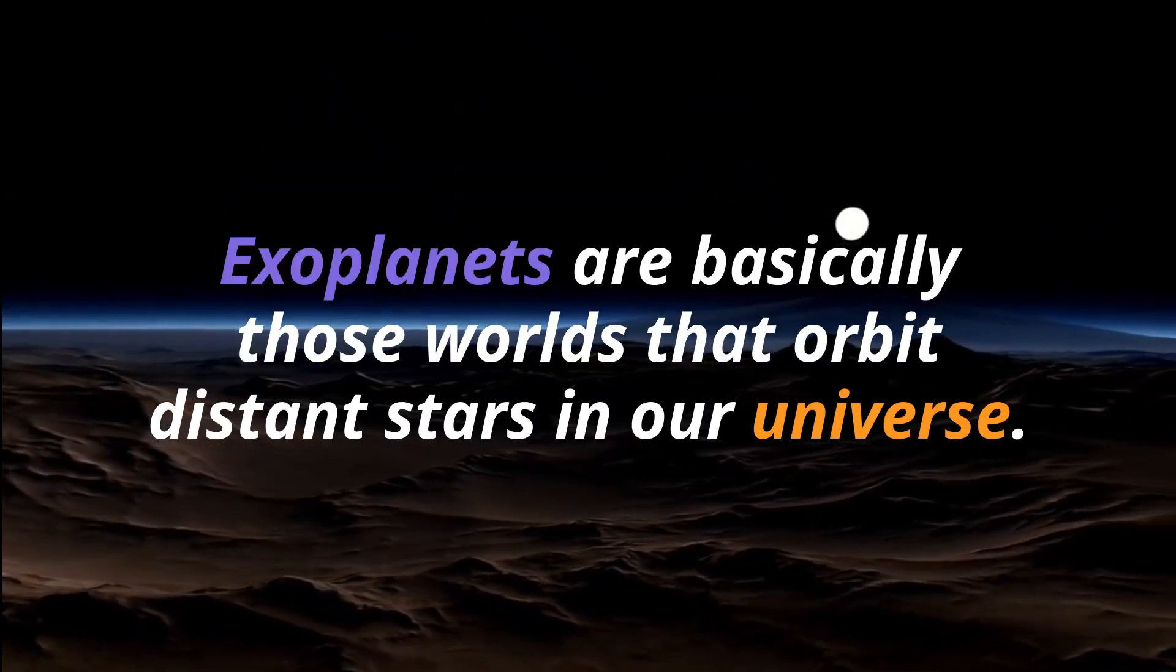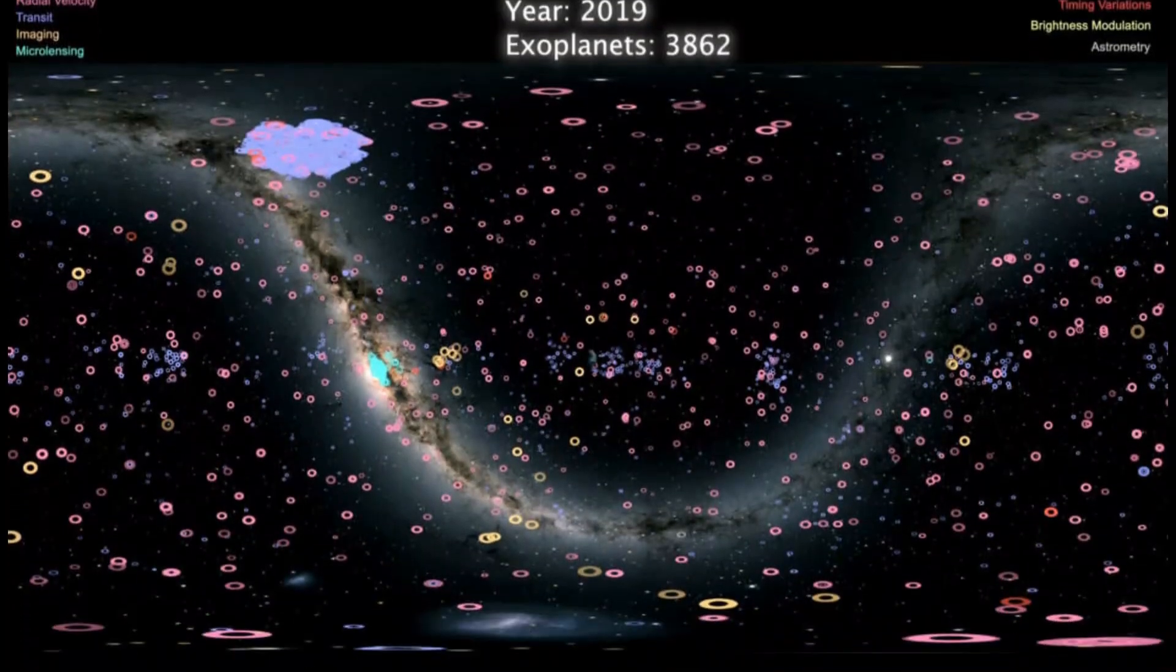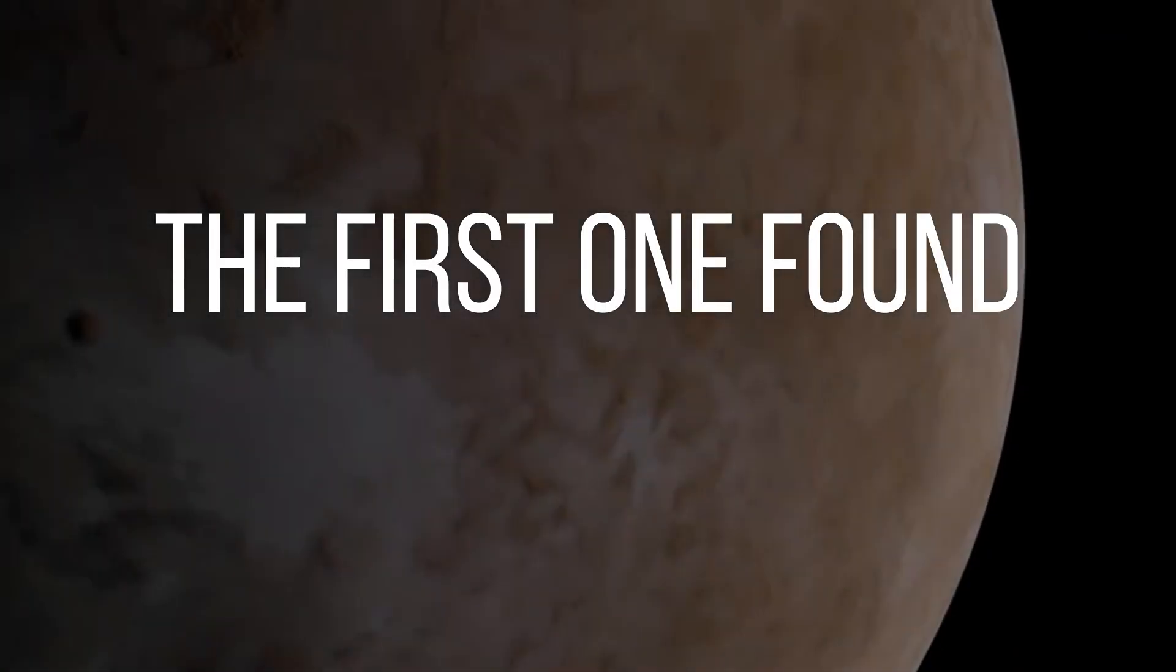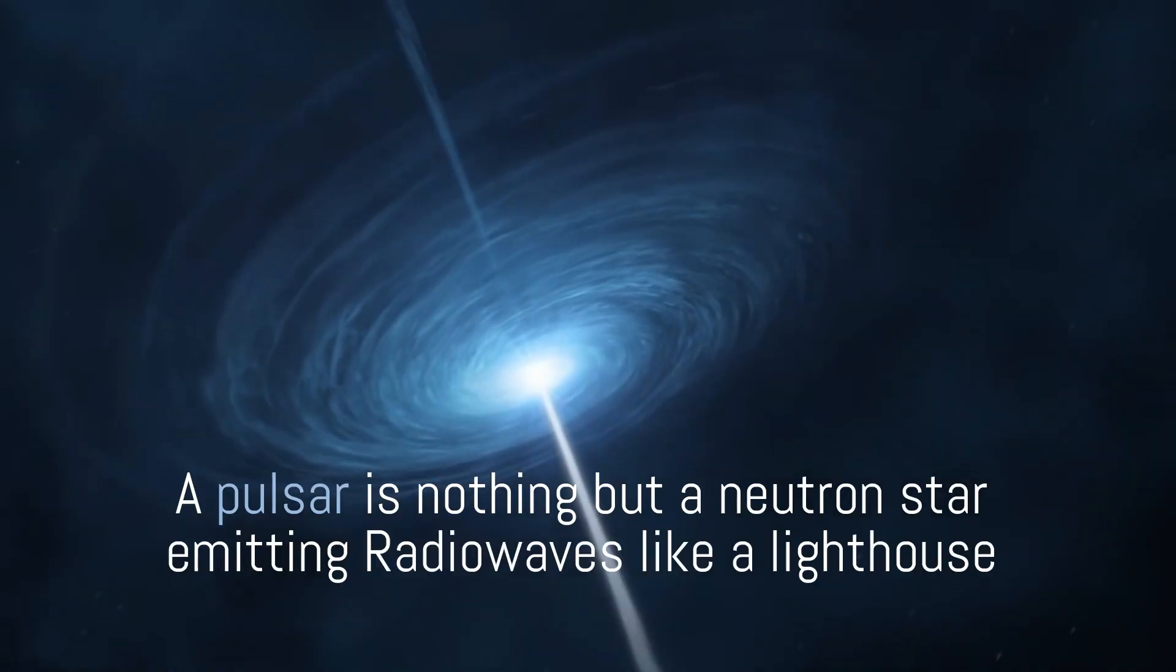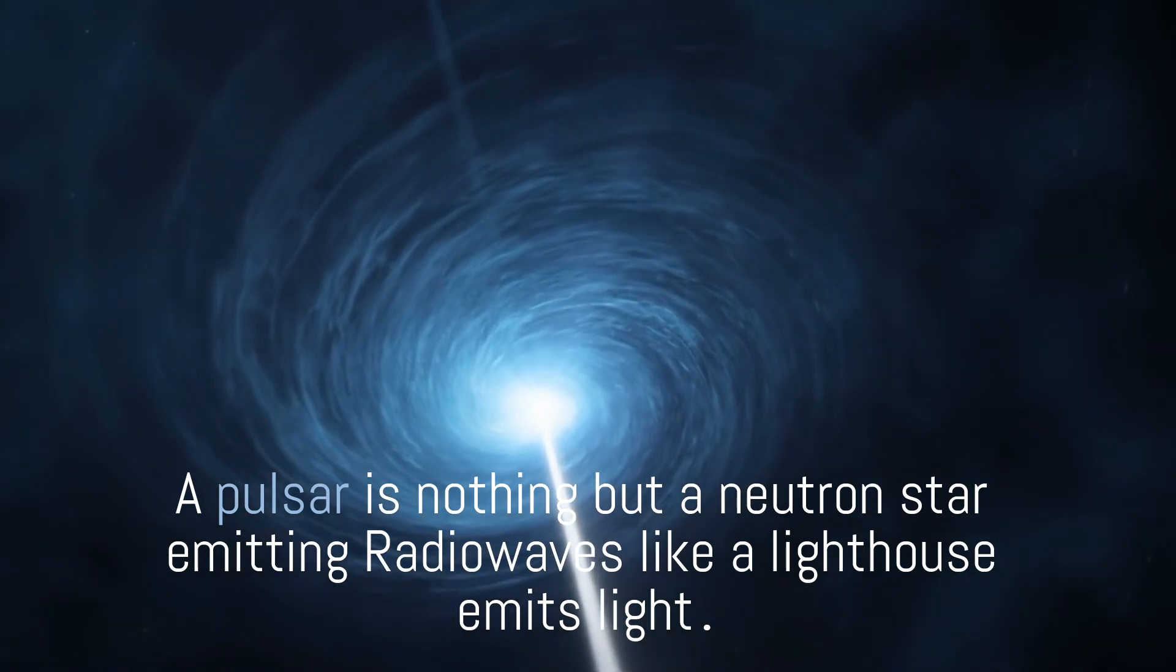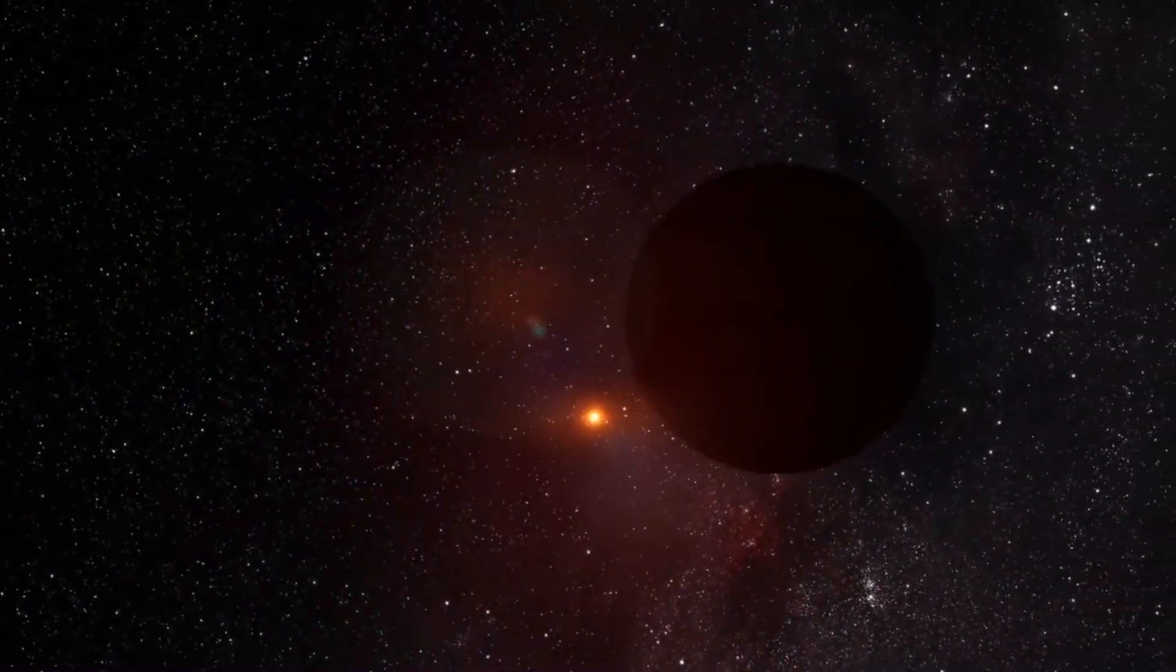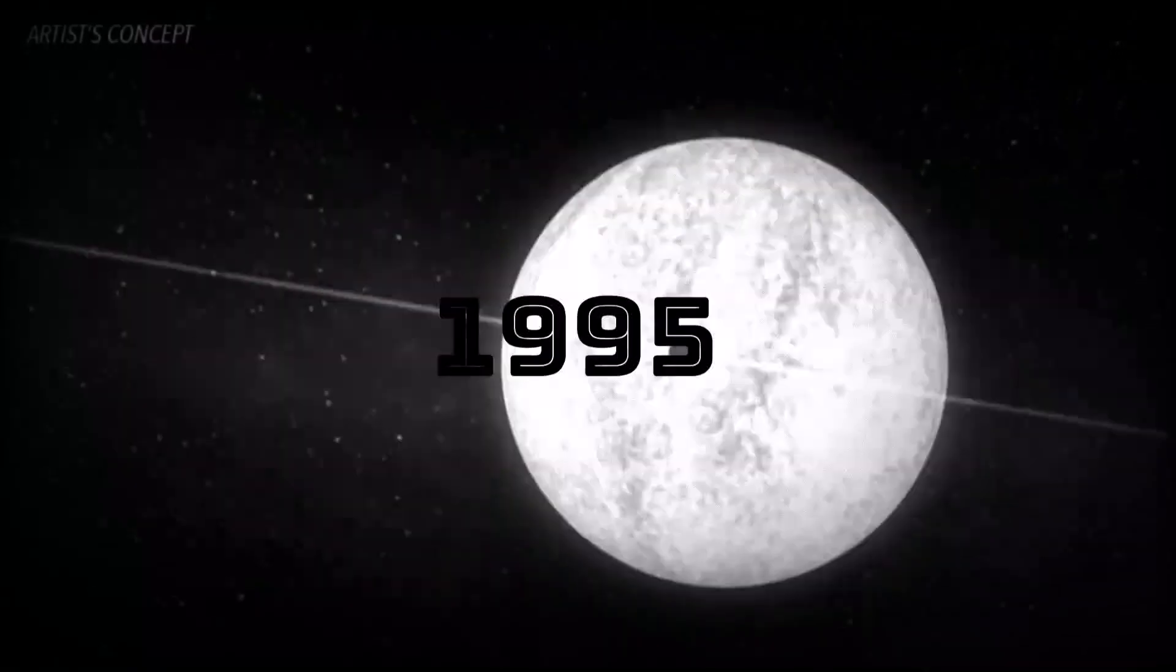Exoplanets are basically worlds that orbit distant stars in our universe. Astronomers have already confirmed more than 4000 exoplanets orbiting these stars, the first one found in the year 1992. It was orbiting a pulsar. A pulsar is nothing but a neutron star emitting radio waves like a lighthouse emits light. The first exoplanet which was found orbiting a sun-like star was as massive as Jupiter and it was discovered in the year 1995.